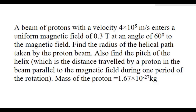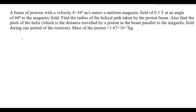Given: mass of the proton m = 1.67 × 10⁻²⁷ kg. The velocity v = 4 × 10⁵ m/s, and theta = 60 degrees, which is the angle the velocity vector makes with the magnetic field.